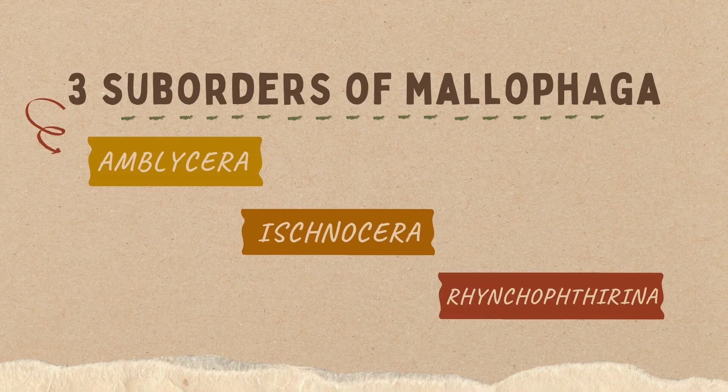There are three suborders of Malophaga: the Amblycera, Ischnocera, and Rhynchophtherina.